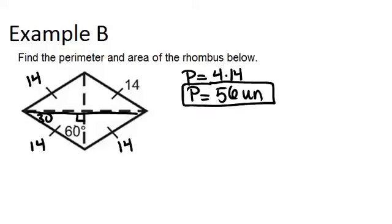Because this is a special right triangle, I know that the side across from the 30 degree angle must be 7, because it's half the length of the hypotenuse, and my other side across from the 60 degree angle will be 7 root 3.